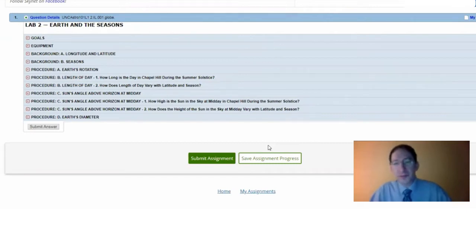All right. In this video, I'm going to overview the background sections for Lab 2. There are two background sections. The first is on longitude and latitude, both how we define these quantities and how we're going to measure them, and the second is on the nature of the seasons.